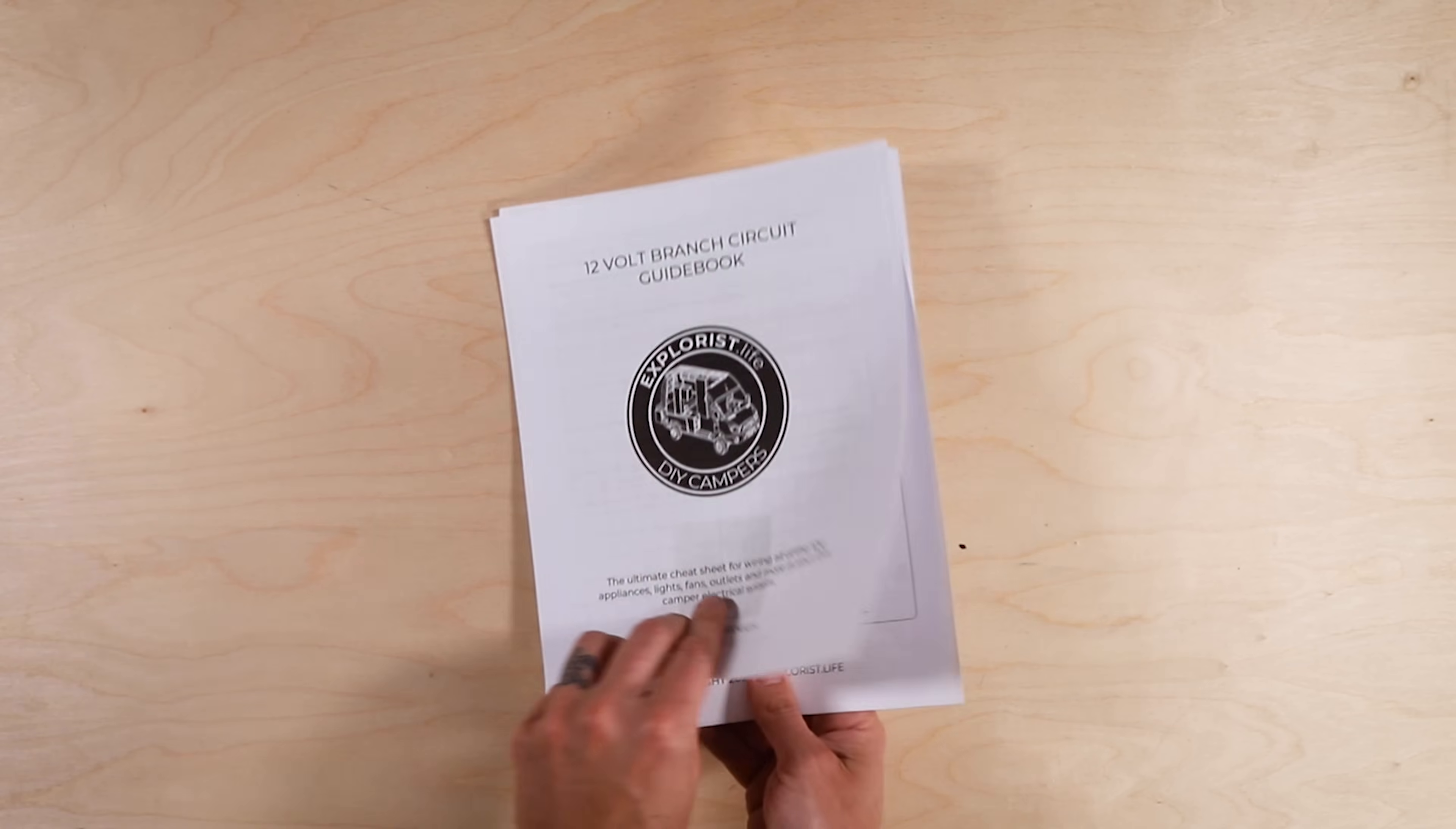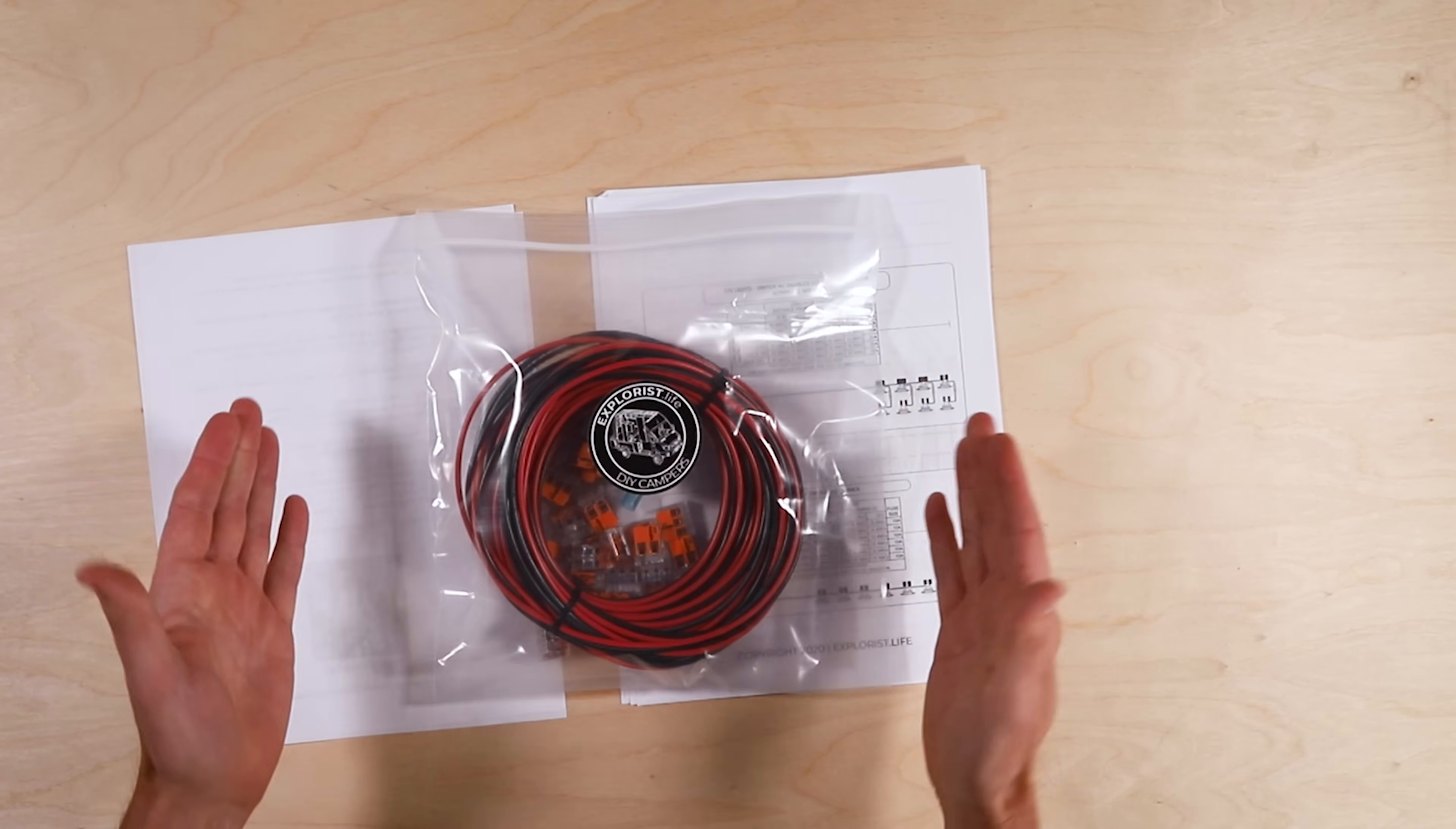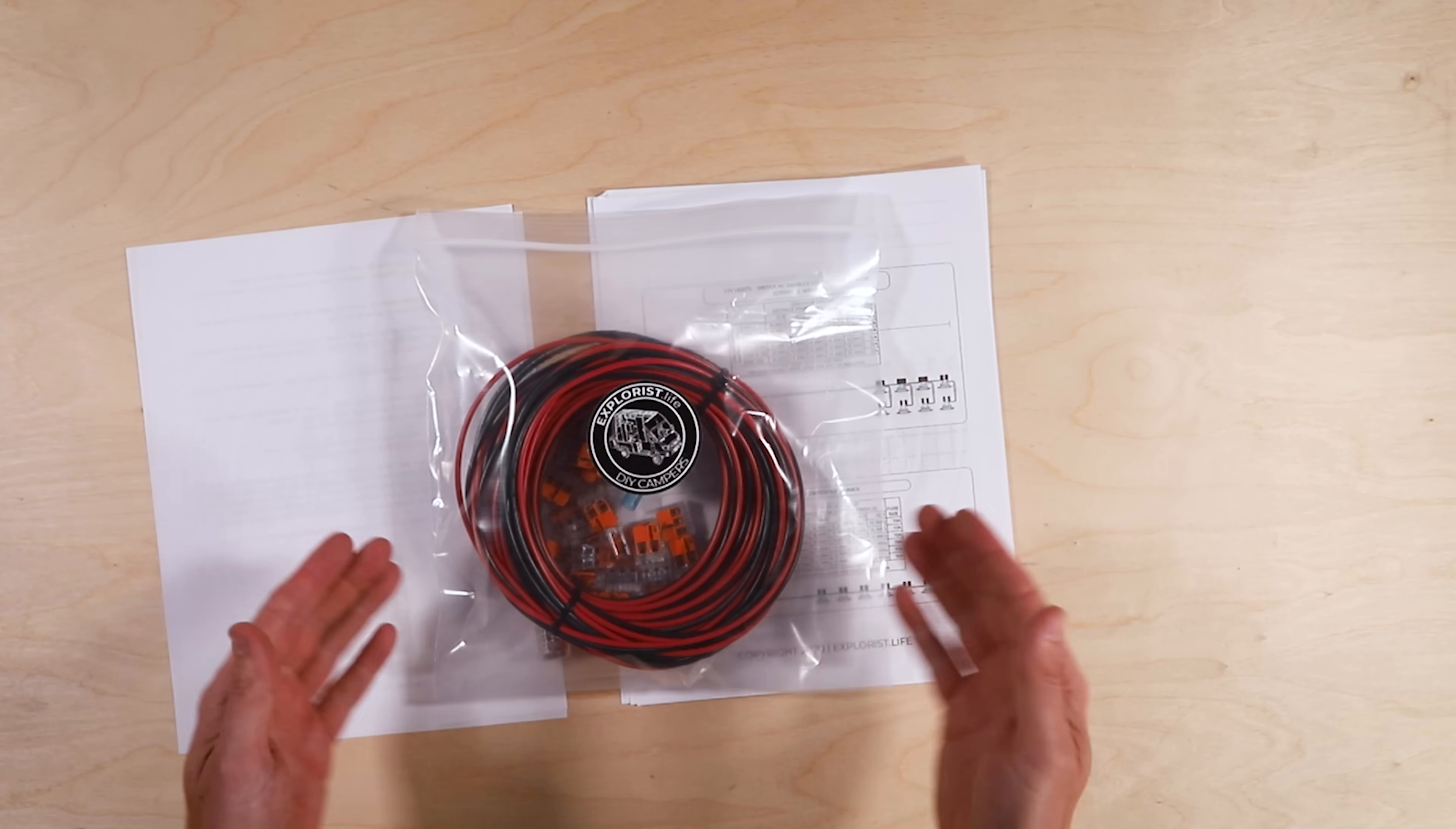This video is based on the diagrams found in the Explorers Life 12-volt branch circuit guidebook. And we have also assembled a puck light wiring kit with all of the exact parts that we used in this video, as well as a few alternative sizes, which can be found at shop.explorers.life.